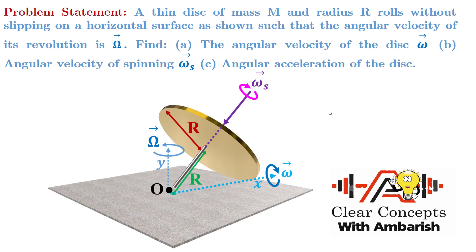I hope you understood the problem. Now let's try to analyze it in detail. Based on the given geometry, this angle is going to be 45 degrees, because this radius is also R and this is also R. Keep that in mind while solving this particular problem. Before that, let's look into the general theory.